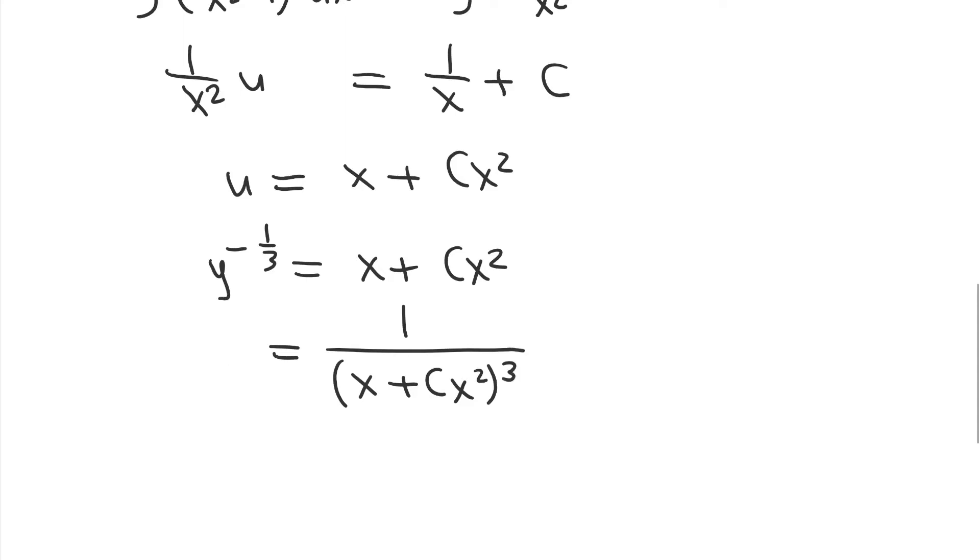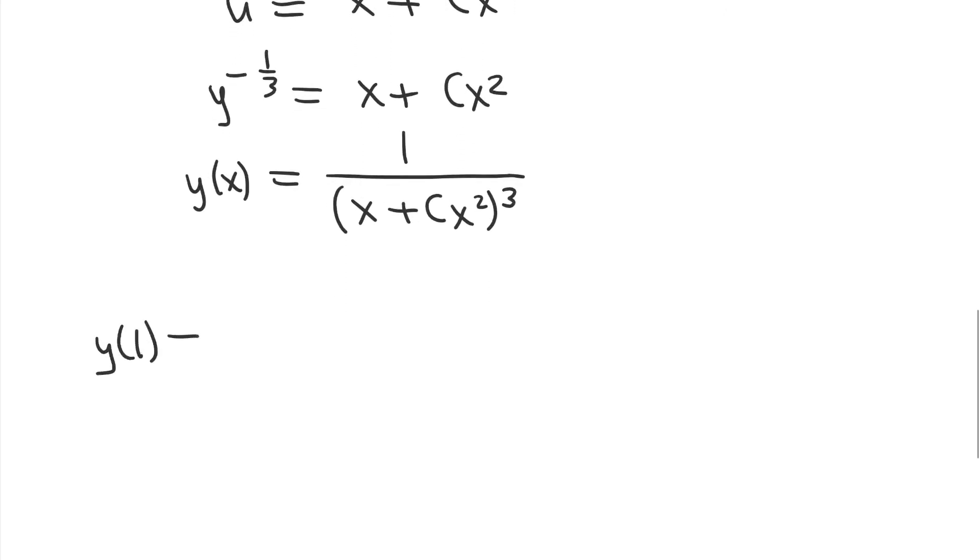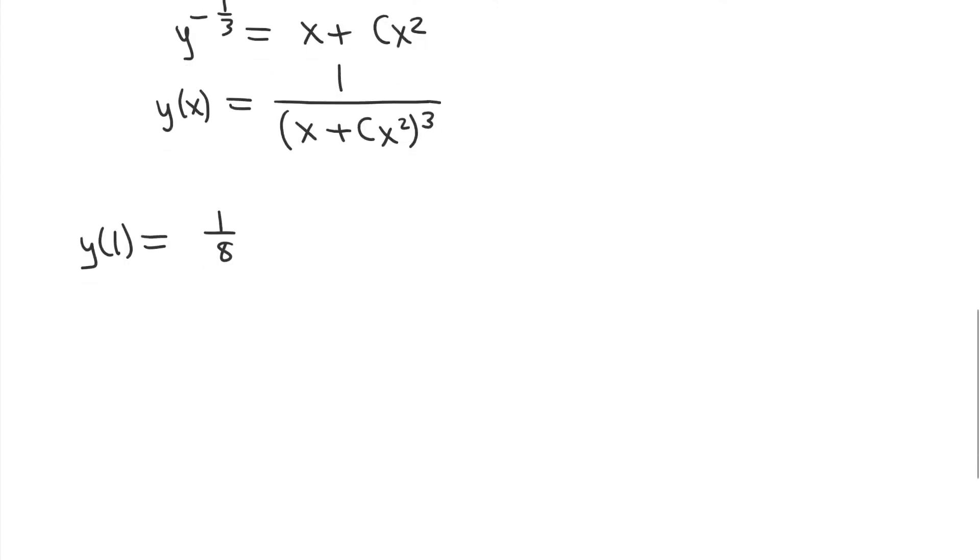And so that is my solution, my general solution for y in terms of x. But we have our initial condition, which is that y of 1 is equal to 1 over 8. And so if I plug in 1 to my general solution, I get 1 over 1 plus c times 1 squared. So I get 1 plus c all cubed. And that's 1 over 8, which means that 1 plus c cubed is equal to 8, which means 1 plus c is equal to the cube root of 8 or 2, which means c is equal to 1.